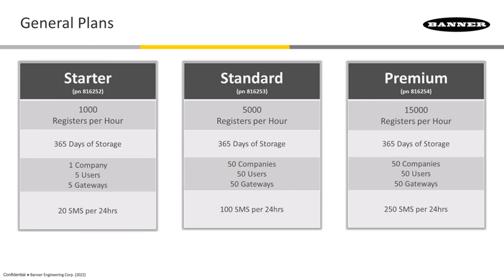There are three different plans or tiers of service for Banner CDS: Starter, Standard, and Premium. Each of these plans has a lot of things in common — they each allow you to connect devices, build graphs and dashboards, and send alerts to your users. However, the big difference between these plans is typically the registers that are allowed to be pushed to the cloud each hour. The Starter plan has a limit of 1,000 registers per hour, while the Premium plan allows you to push up to 15,000 registers per hour. There are also some limits, as you can see here, between the different plans in terms of number of companies, users, and gateways that can be associated with each plan.